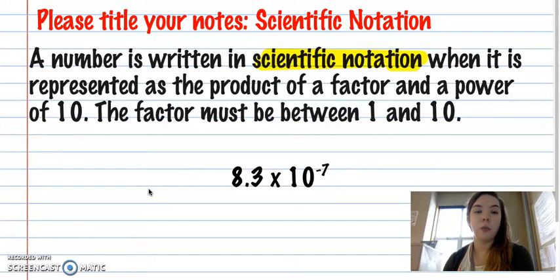Scientific notation is when a number is represented as the product of a factor in a power of 10. So it would look something like this. The factor must be between 1 and 10. So they're talking about this very front number. It should only have one number in front of your decimal, so it's got to be larger than 1 but smaller than 10. So this first digit can't be a 0, and it can't be 2 digits.